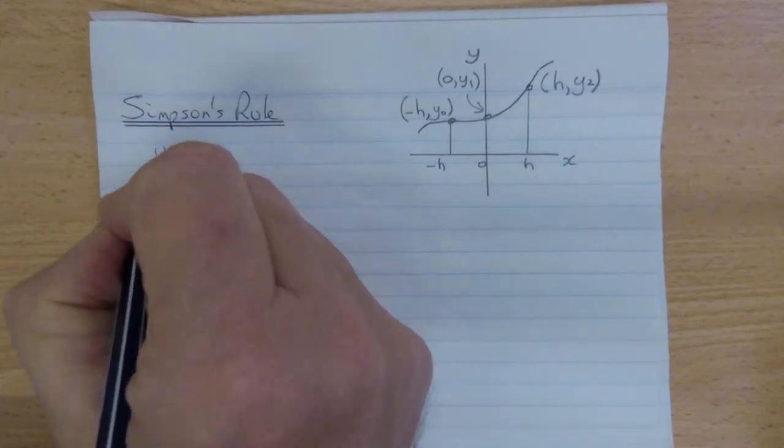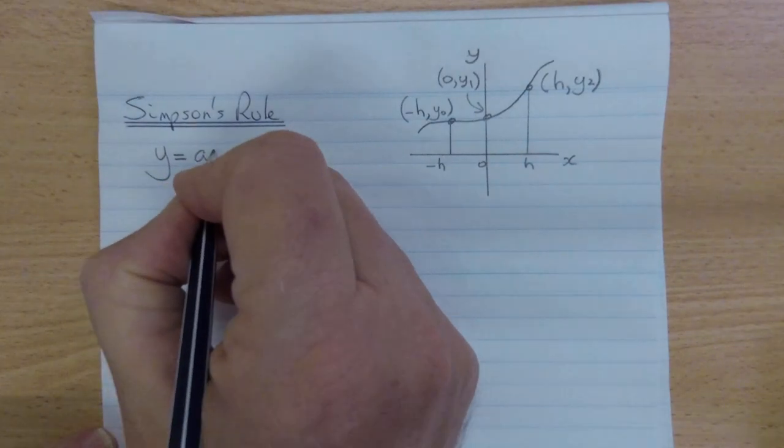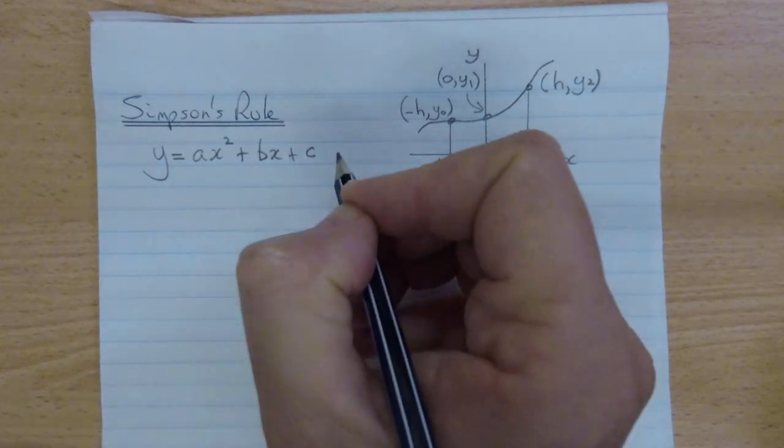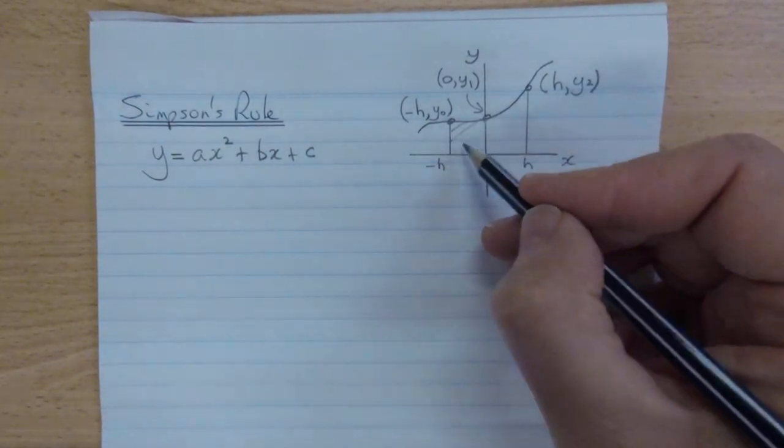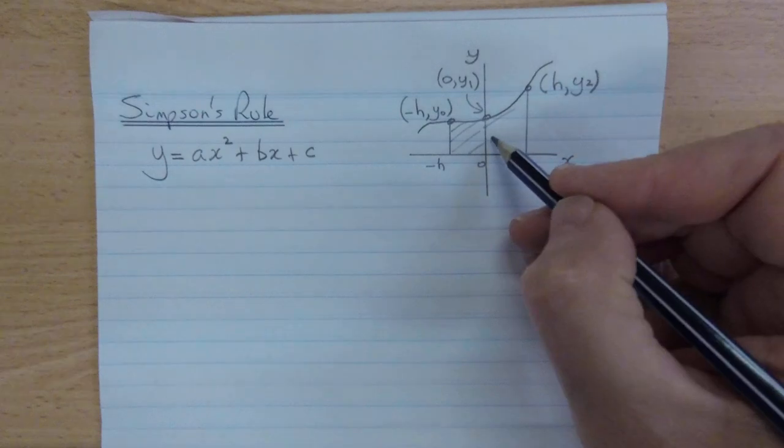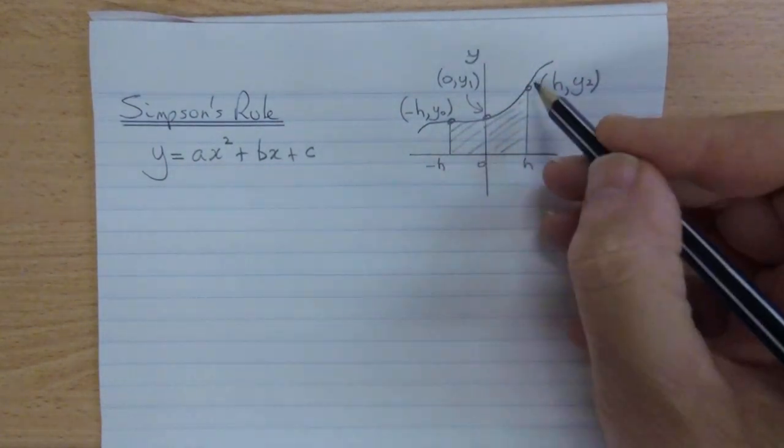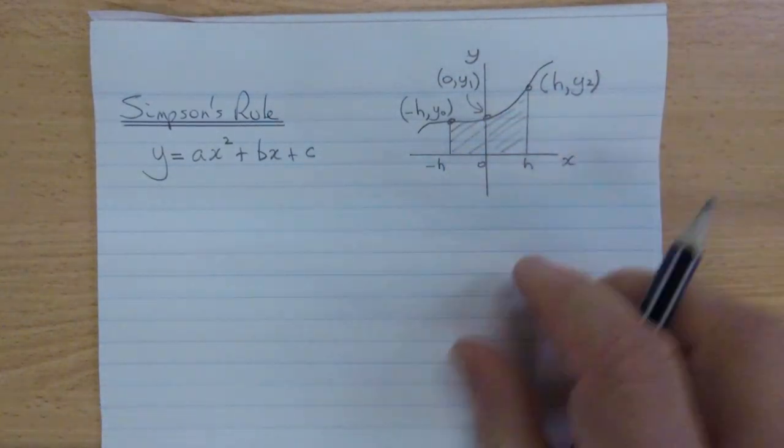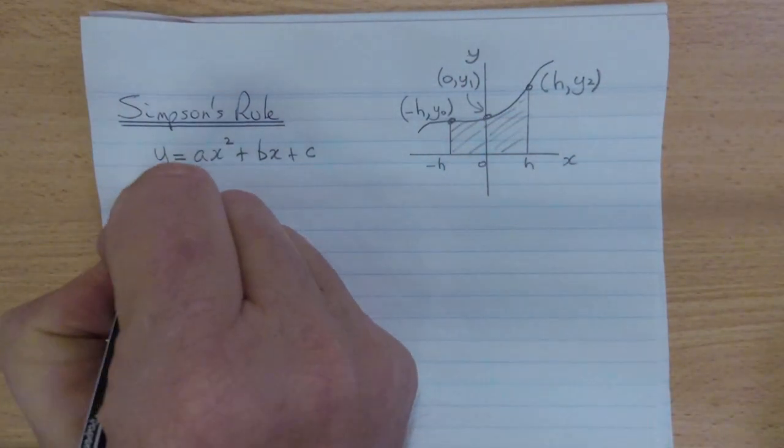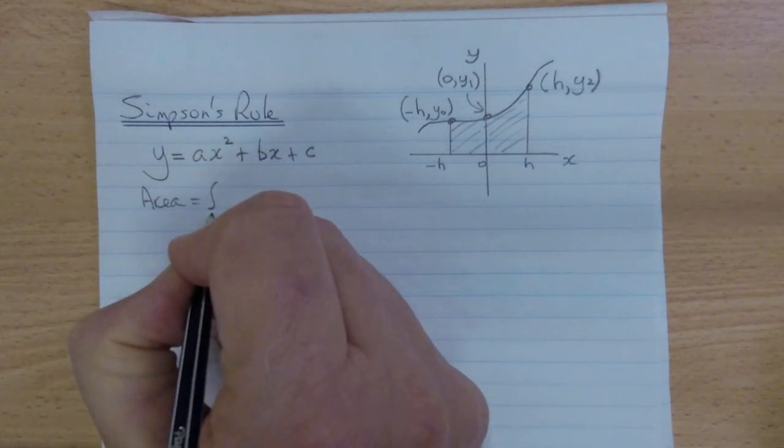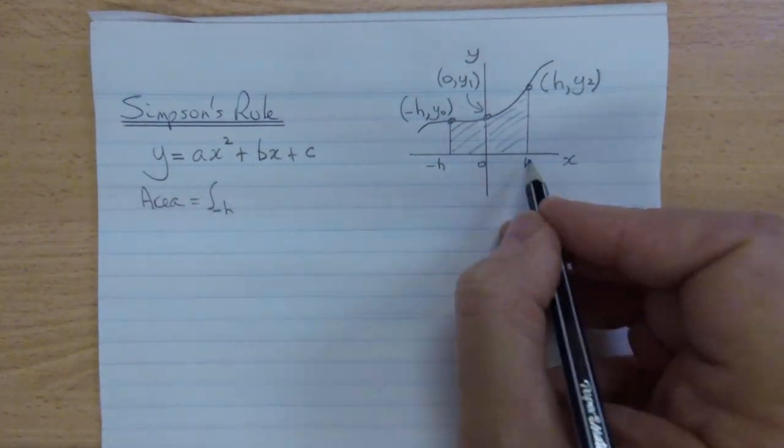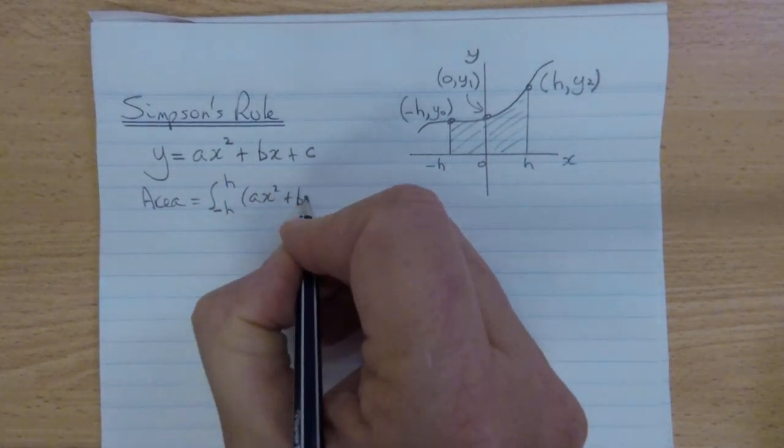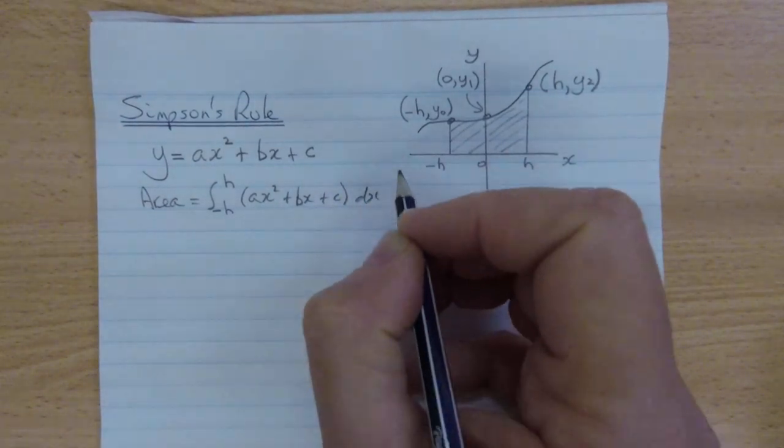So we start with the general equation for a parabola. y equals ax squared plus bx plus c. And of course, because we're looking for integration, we're wanting to know the area underneath this function, bounded by the lower and upper terminals here, and by the x axis. So we know that the area is calculated as a definite integral from, in this case, negative h to positive h. y equals ax squared plus bx plus c dx.